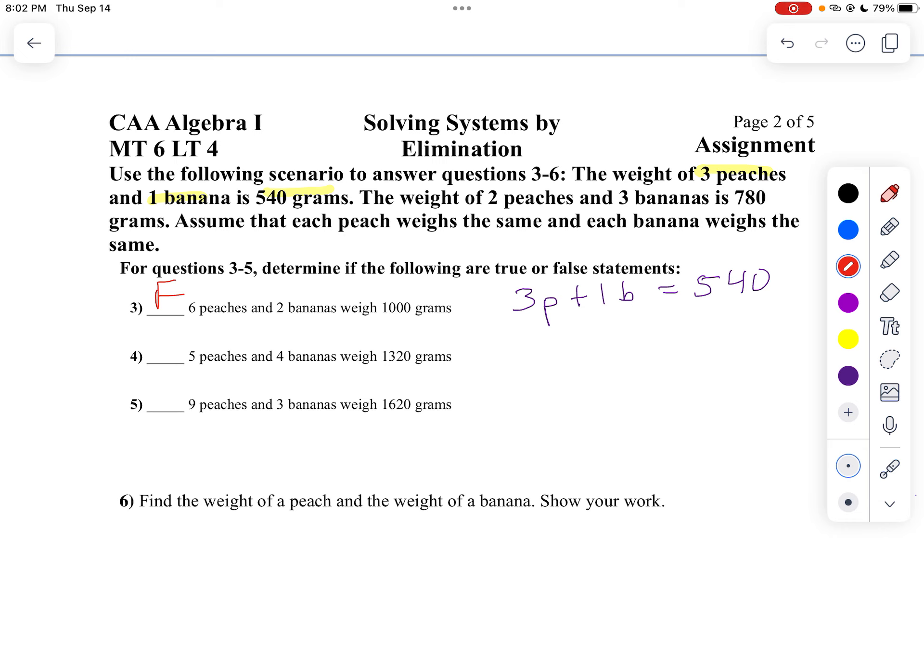And the next one, let's take a look. I can't get five peaches and four bananas from the first equation. Let's write the second equation. My second equation is going to be two peaches and three bananas is 780. So two peaches plus three bananas equals 780.